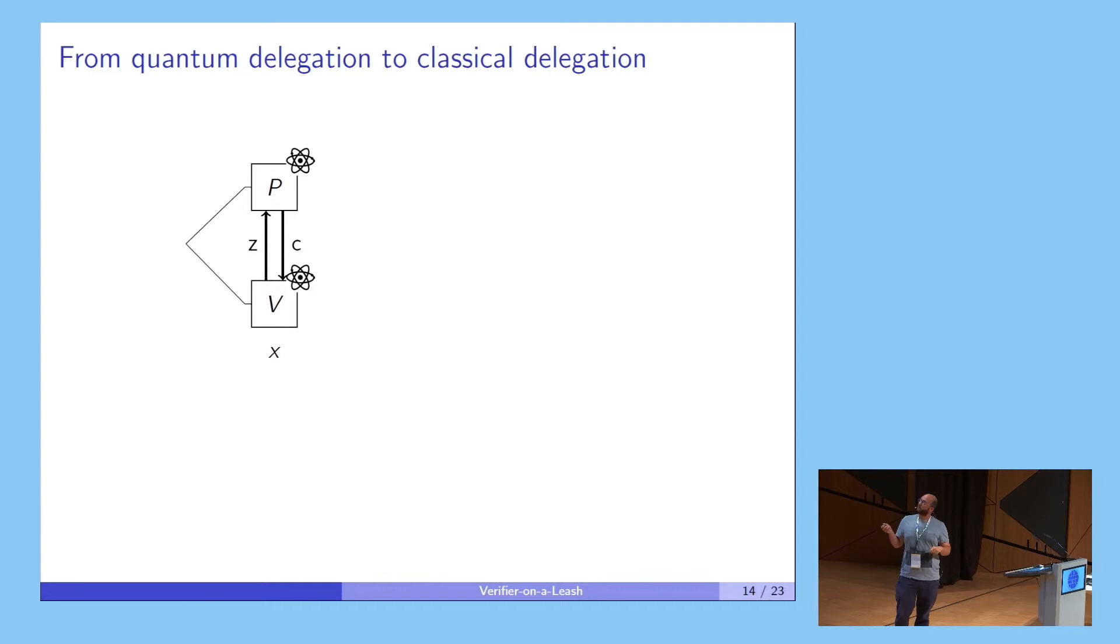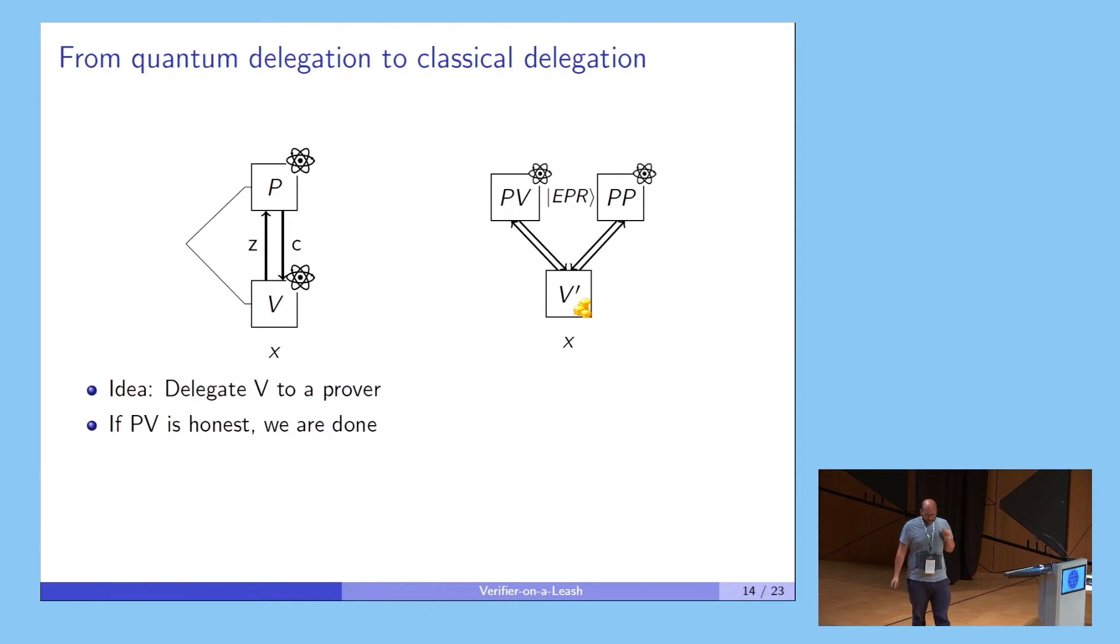In our result, what we do - we start from this protocol where we have this quantum verifier, and we want to make our verifier classical by delegating the verifier of the first protocol to a second prover. So now we have two provers, PV and PP, and the verifier will help them run the original protocol where the verifier was also quantum. And suppose for a moment that PV is honest in this second protocol. Then we could merge V and PV, V prime and PV, and then we're back to the first protocol. Then our protocol will be sound. The problem is how can you test PV? How can you enforce PV to do the honest strategy?